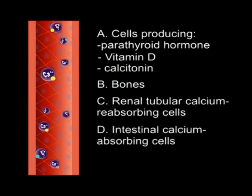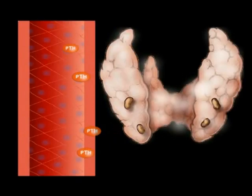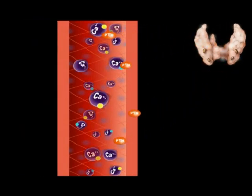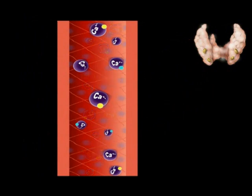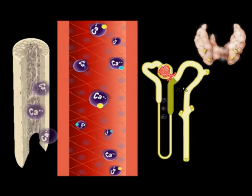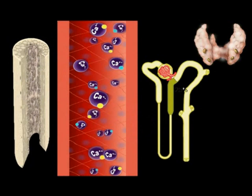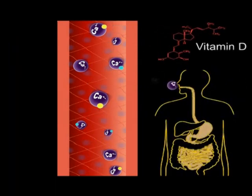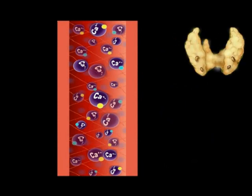Parathyroid hormone is secreted when there are low levels of plasma calcium, therefore stimulating bone resorption and tubular reabsorption of calcium. These results in an increase in calcium levels and inhibits parathyroid hormone activity in a classical negative feedback mechanism. Vitamin D promotes intestinal absorption of calcium against a concentration gradient, resulting in increased plasma calcium.